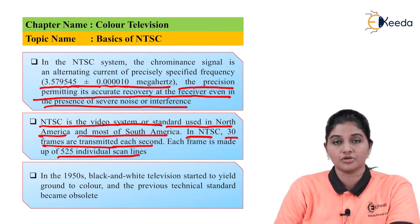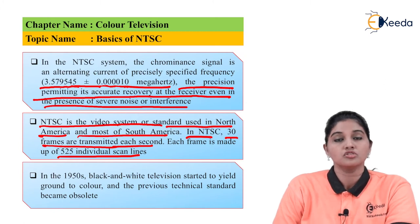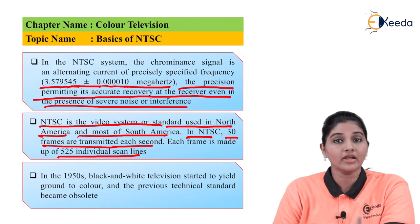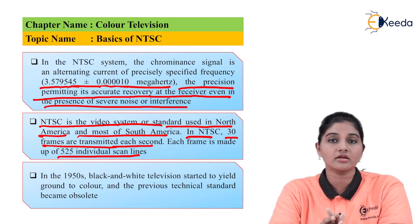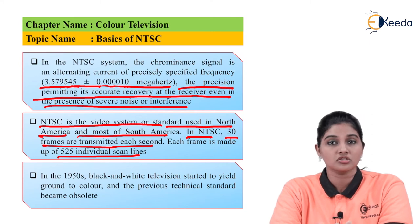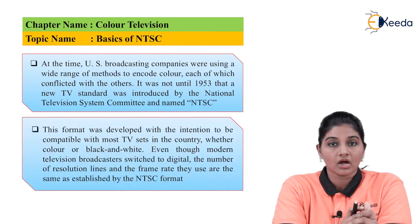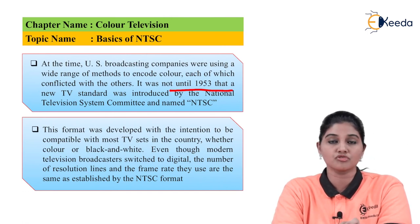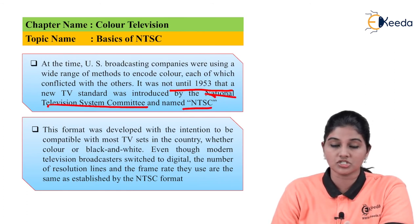Now let's see why NTSC came into the picture. In the 1950s, black and white television was prevalent but the technical standards used at that time were not very useful. The American Broadcasting Company used a wide range of standards for encoding the signal, but these standards had conflicts with each other. Therefore, a common standard came into the picture — that is NTSC. Until 1953 there was no common standard for television systems, but after that the standard called NTSC, the National Television System Committee, was established.